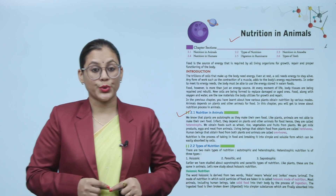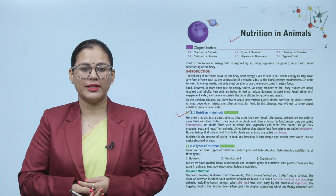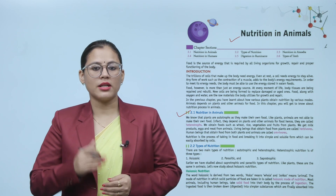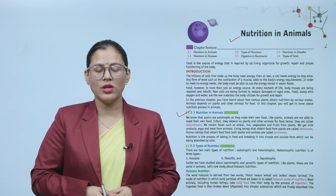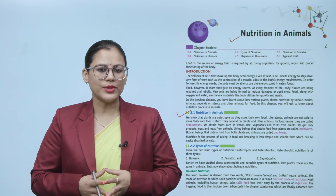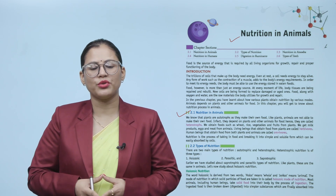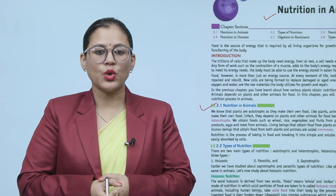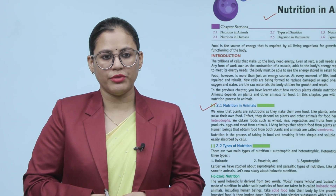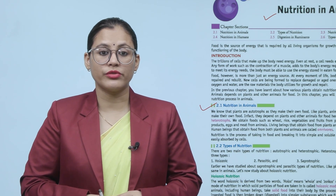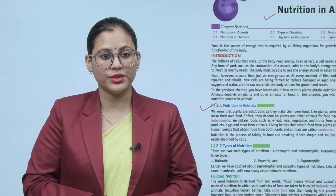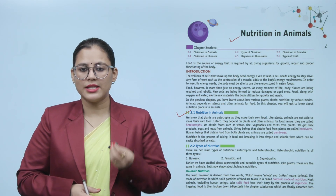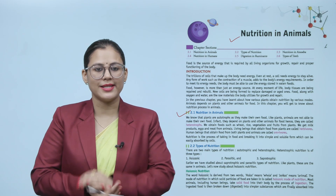We know that plants are autotrophs as they make their own food. Unlike plants, animals are not able to make their own food; they depend on plants and other animals for food, and hence they are called heterotrophs. We obtain food such as wheat, rice, vegetables and fruits from plants, and milk products, eggs and meat from animals. Living beings that obtain food from plants are called herbivores, while human beings that obtain food from both plants and animals are called omnivores. Nutrition is the process of taking in food and breaking it into a simple and soluble form which can be easily absorbed by cells.